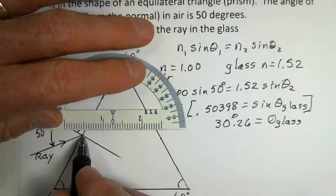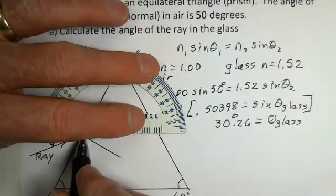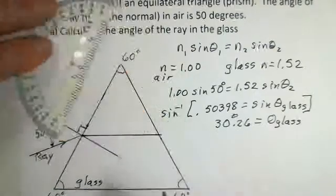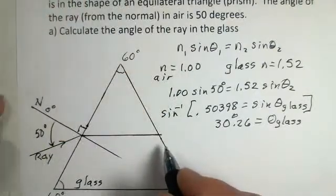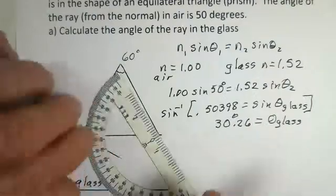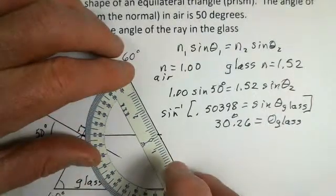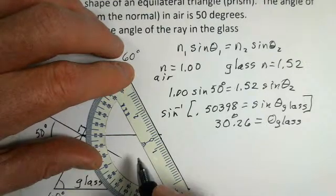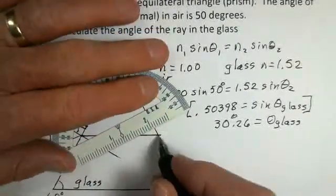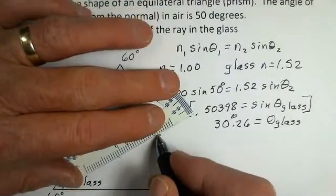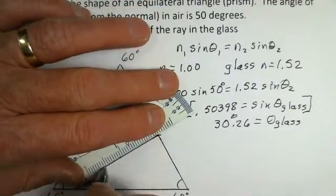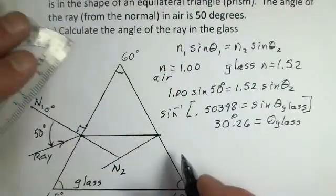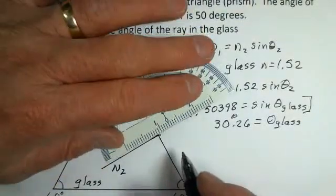And now take my ray going across here all the way to the other side and now at this other side I'm going to put on a normal. Here would be our normal, second normal perhaps on this side and I'm going to extend it out here a ways also.